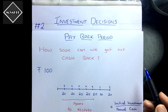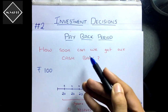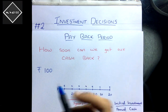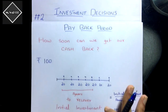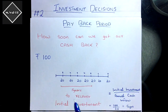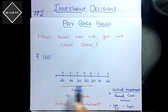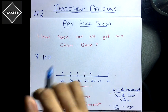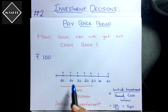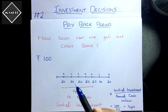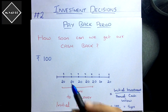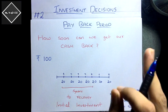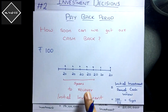The payback period technique is about how soon we can get our initial investment back. For example, if you invest 100 rupees in a project and the annual cash inflow is 20 rupees equally for seven years, how long would it take to recover? Simple — five times 20 equals 100, so it takes five years to recover the initial investment.